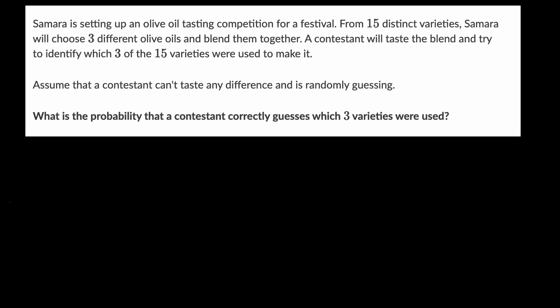So we know several things here. We have 15 distinct varieties and we are choosing three of those varieties. And anytime we're talking about probability and combinatorics, it's always interesting to say, does order matter? Does it matter what order that Samara is picking those three from the 15?